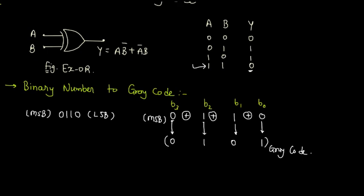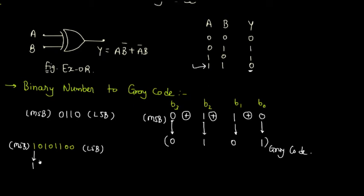Let's take one more example. We have the binary number 10101100, and we want to convert this number into grey code. The process starts from MSB to LSB. First, write the MSB bit as it is. Then use XOR between the first bit and the next bit. If we use XOR between 1 and 0, both inputs are different, so the output is 1.